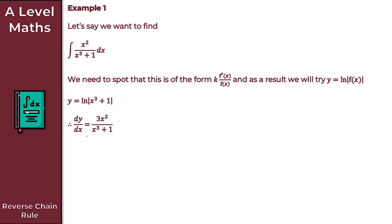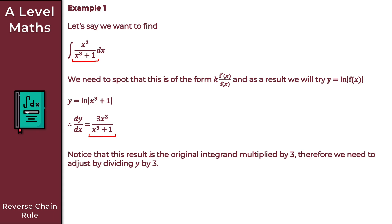Using the reverse chain rule, we compare dy/dx to our integrand. What we have is 3 times our integrand — we get 3x squared all over x cubed plus 1, but we just want x squared all over x cubed plus 1. This result is the original integrand multiplied by 3, so we need to adjust by dividing y by 3. Therefore, the integral of x squared all over x cubed plus 1 with respect to x equals 1 over 3 times ln of x cubed plus 1 plus c, where plus c is our constant of integration.